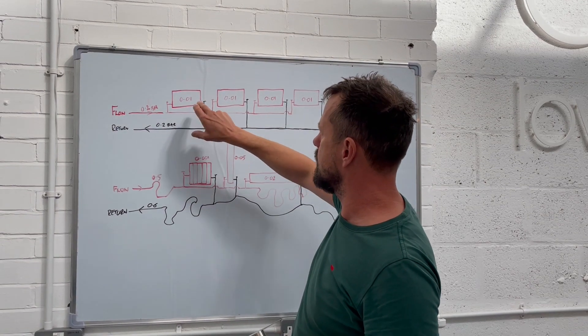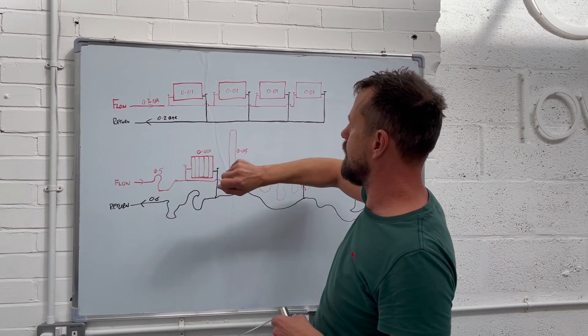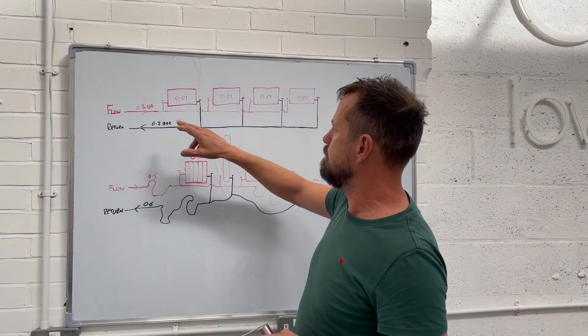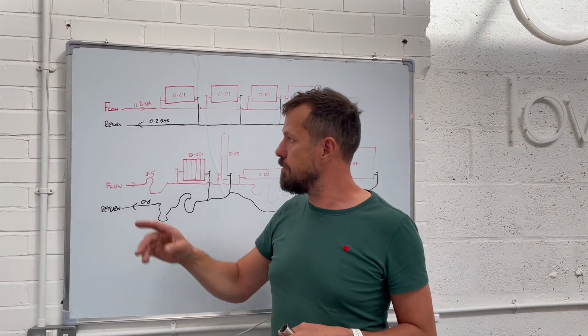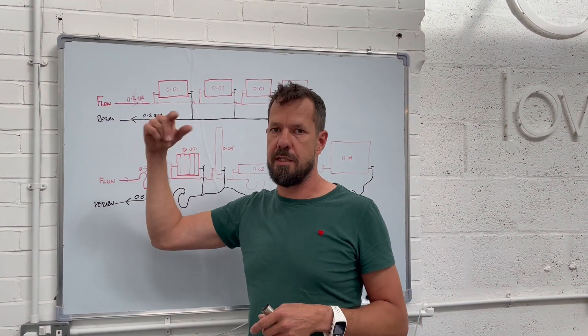You just flow the water through. It's just as easy to go around that one as it is around that one, so it does so naturally. No problem. And then off it goes back down to the return and it goes to the boiler and it circulates all over again.